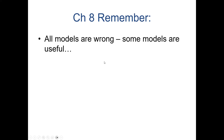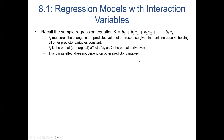The idea is we want to find a reliable, useful model. In multiple linear regression, we have coefficients — the slopes — on each of the predictor variables. B sub J measures the change in the predicted value of the response given a unit increase in the predictor, holding all other predictor variables constant. That slope is the partial or marginal effect of that predictor on the response.